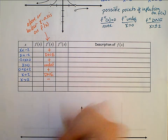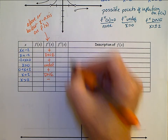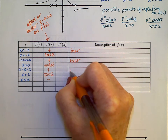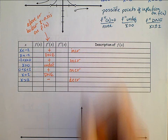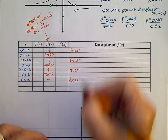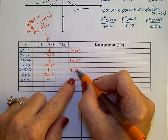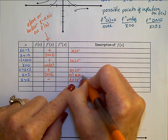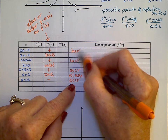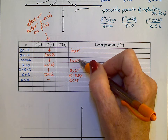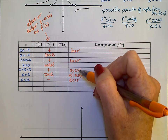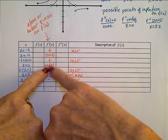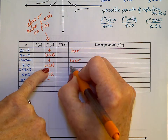f prime tells us about increasing or decreasing on f of x. We see changing from increasing to decreasing — that gives us a relative maximum. No extreme value where we change from increasing to increasing. At x equals 0, f prime is undefined, which leads us toward a vertical tangent.